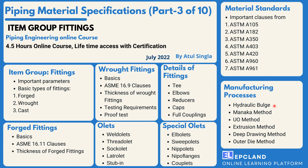We will also look at the various manufacturing processes for fittings and try to understand how these fittings are manufactured. Then we will look into material standards — all the forged, wrought, and butt-weld materials used — covering each ASTM standard in detail. Once we go through all these ASTM standards, we will know how to refer to them in live projects. This is going to be a very interactive session.